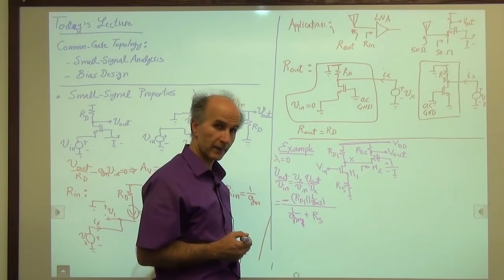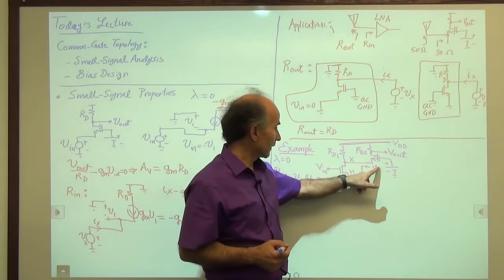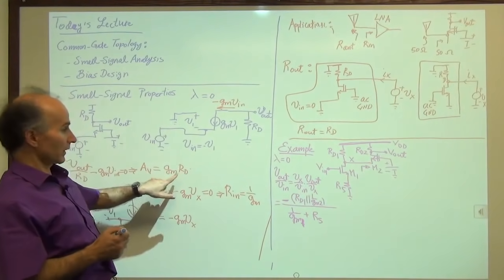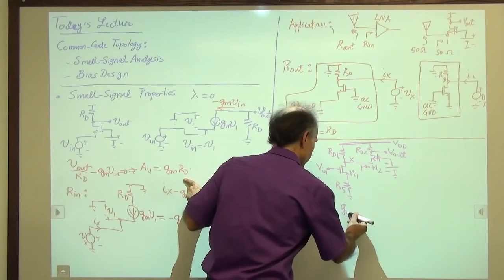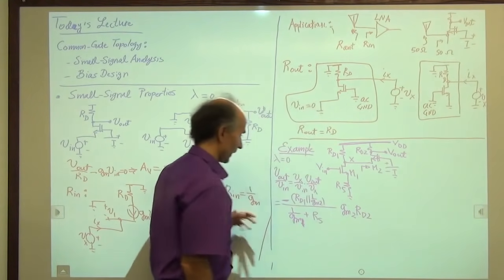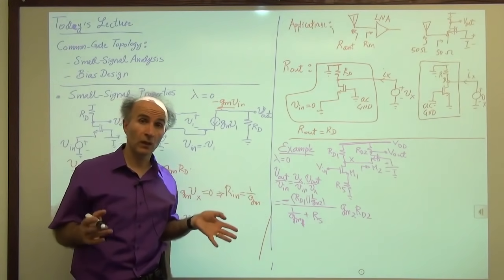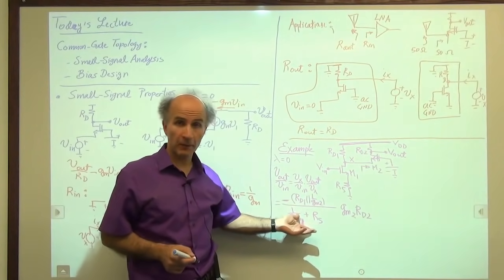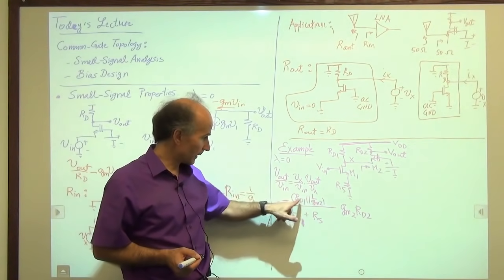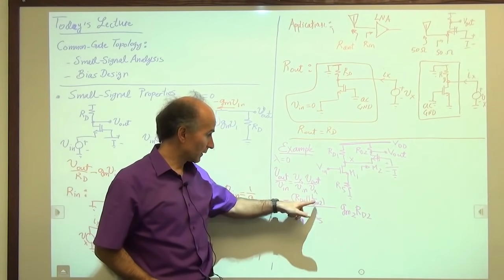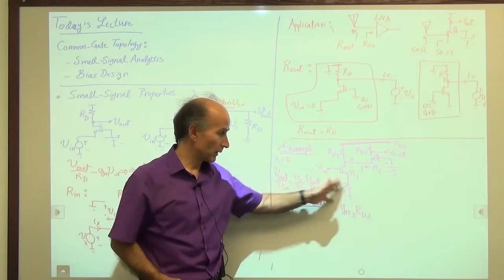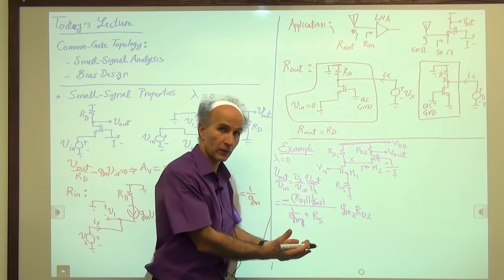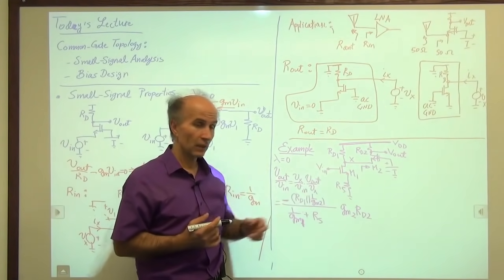Now we go to Vout over Vx. That's just the gain of a simple common gate stage with lambda equal to zero, which is Gm2 times Rd2. This is the overall gain of the circuit. Had we drawn the small signal models of both transistors and tried to solve everything, we would have eventually reached something like this but perhaps more complex. That's why we want to build upon prior knowledge and gradually use those results in analyzing more complex topologies.